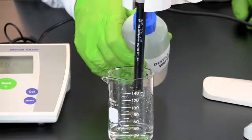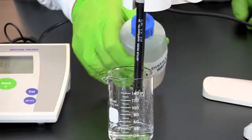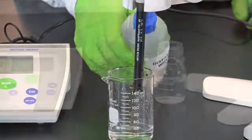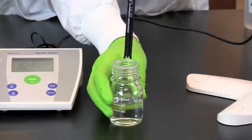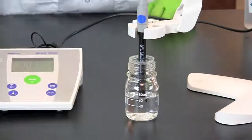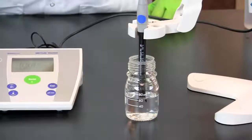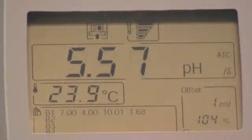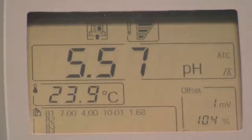You are now ready to measure the pH of an unknown solution. Place the unknown solution beneath the electrode and slowly lower the arm so that the electrode is fully submerged in the solution. This sample has a pH of 5.57 at a temperature of 23.9 degrees Celsius.